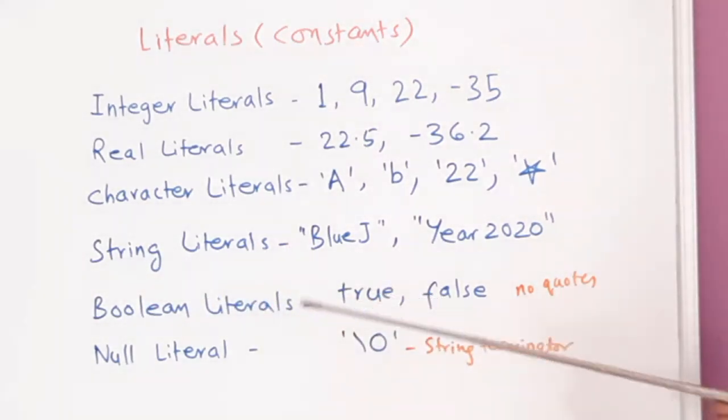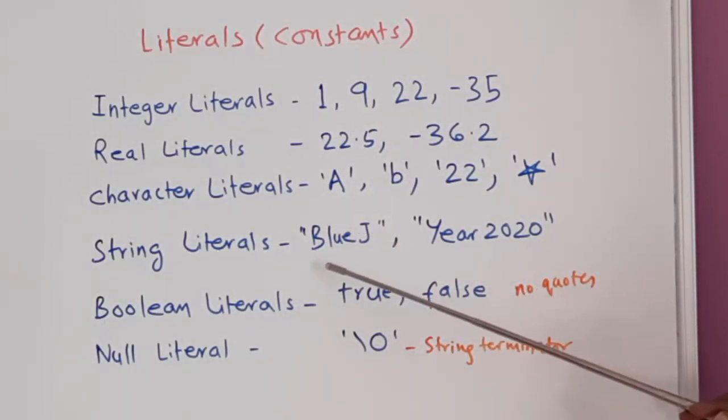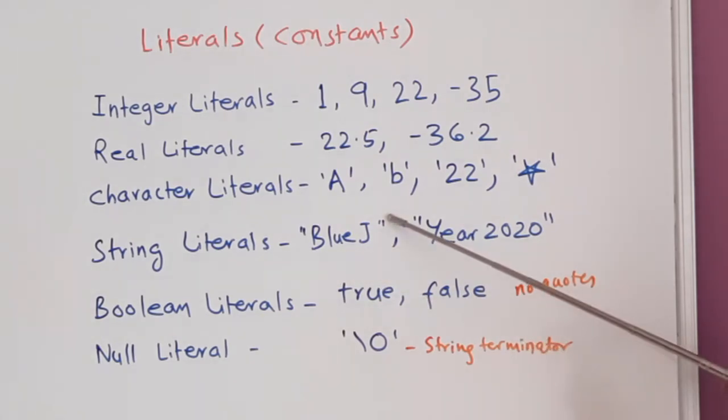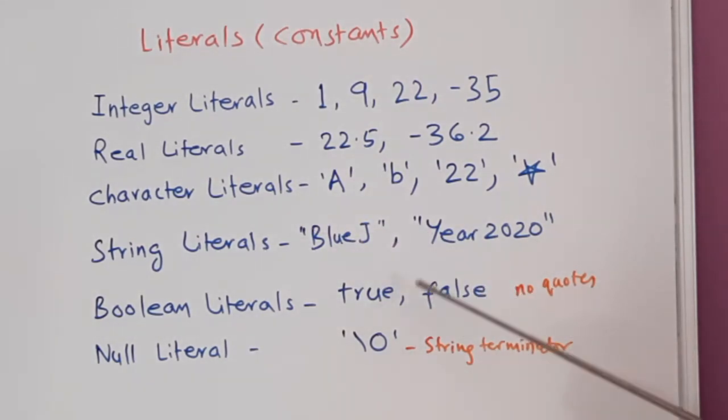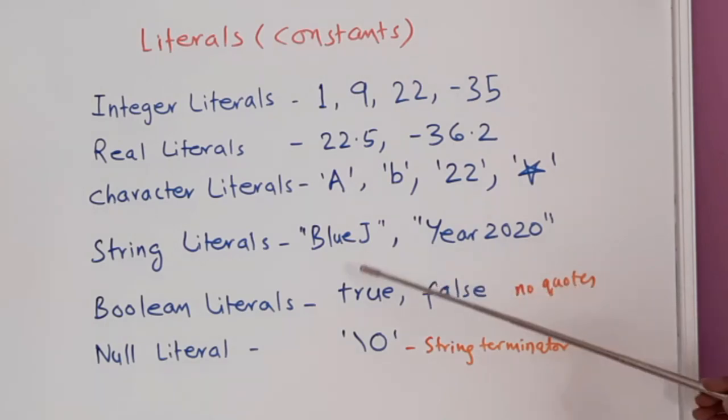Then there are string literals. For writing string literals, we use double quotes. If I write BlueJ in double quote, it becomes a string literal. If I write Year 2020 inside a double quote, it becomes a string literal. Then we have boolean literals. There are only two boolean literals, true and false. It is not written inside any quote. True and false are boolean literals.